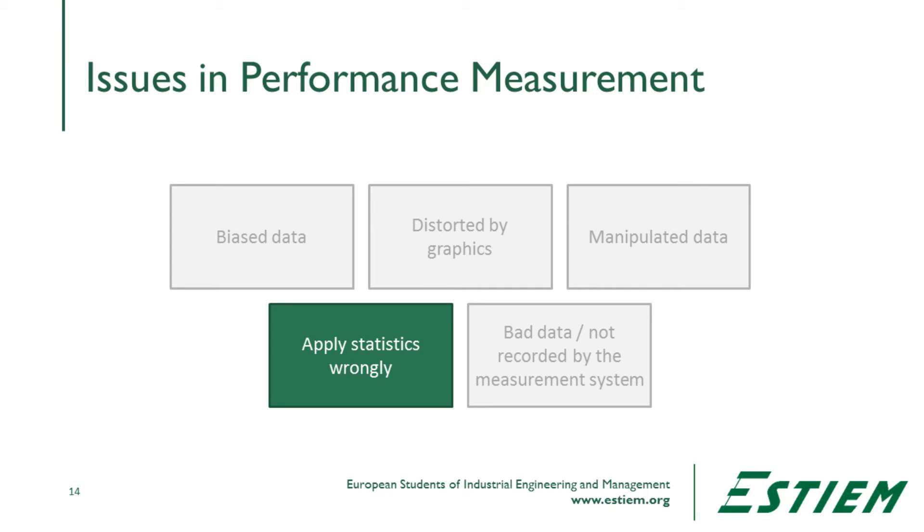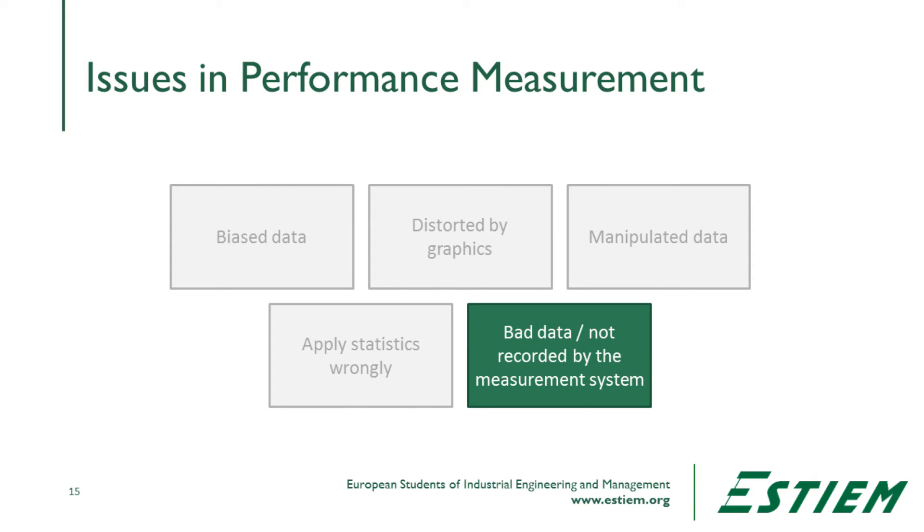Some people apply statistics wrongly — for example, taking an average out of attribute data, which leads to distorted results. Sometimes the data is just bad because the measurement system does not record it properly. You've probably heard the saying: garbage in, garbage out — that's exactly what we don't want. We want to understand the quality of the data and what it's actually telling us. All management and process decisions have been based on the data we already have, so we should first look at the dirty, uncorrected data, because that is what we have historically used to run the process.